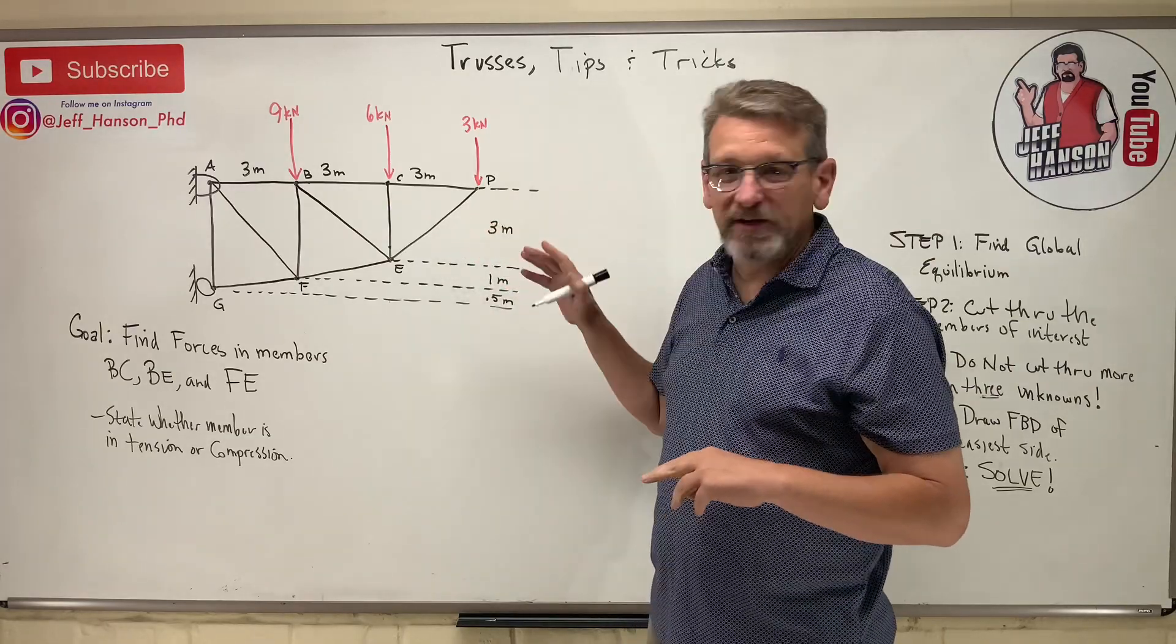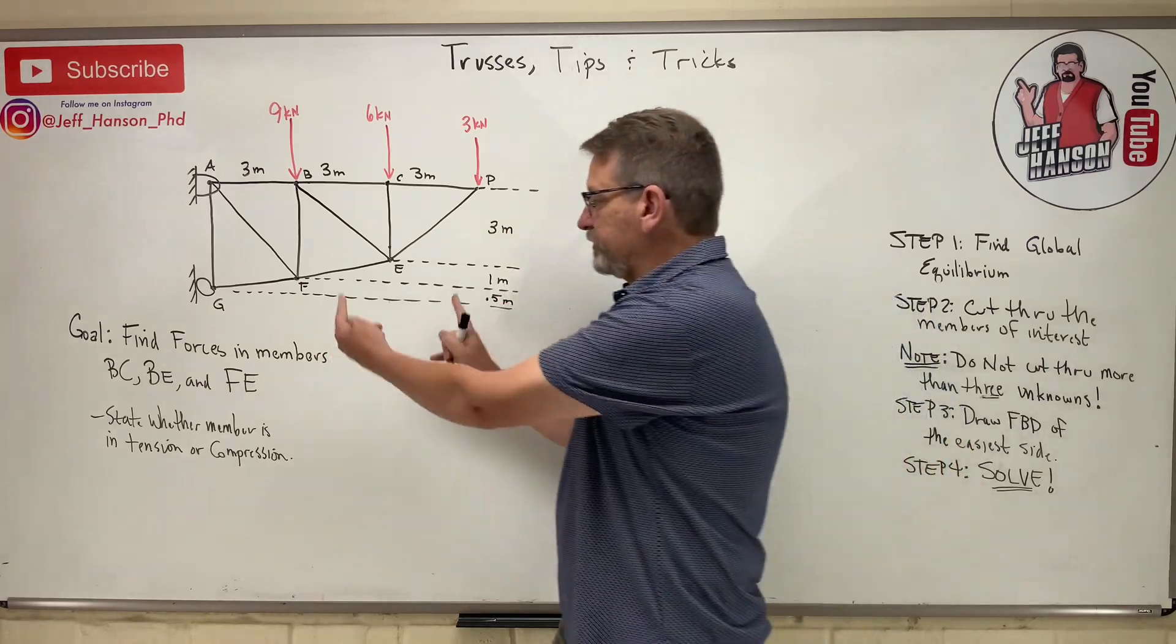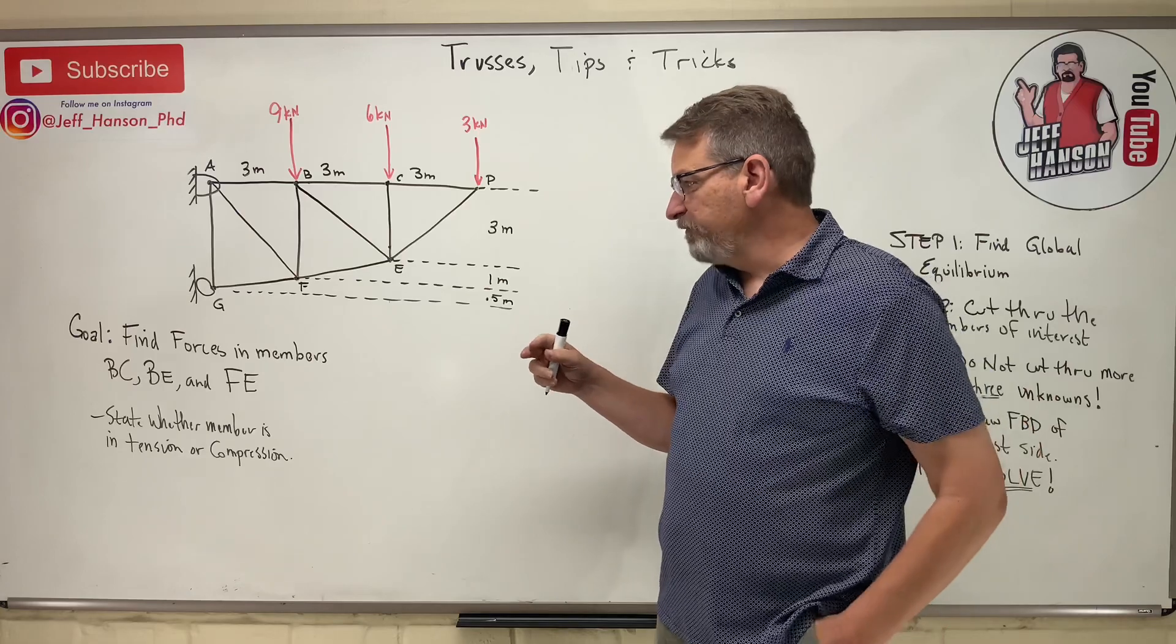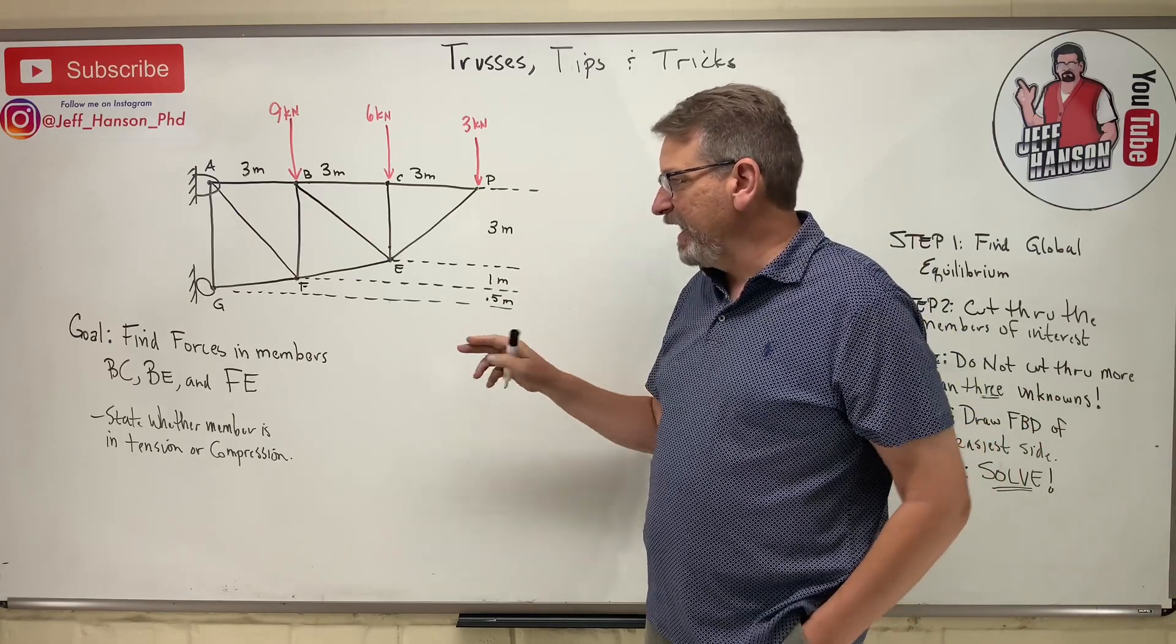I've got a different kind of truss here. Instead of this one being typically anchored to the ground, this one's anchored to the wall. So they want us to find four set members, BC, BE, and FE.